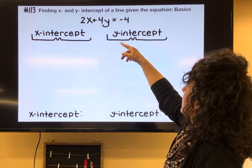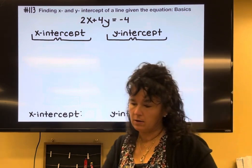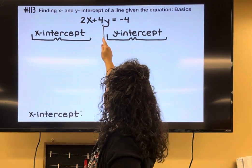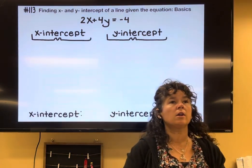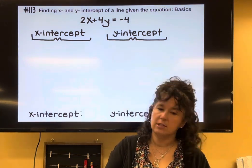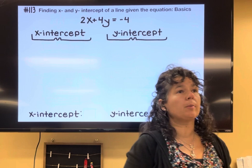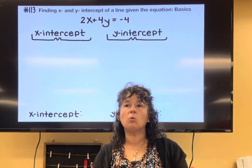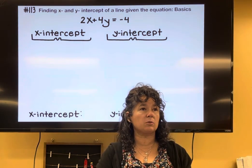We would like to find the x and y-intercept of the line 2x plus 4y equals negative 4. You can jot down in your notes that to find an x-intercept, you're going to replace the y with zero, and to find a y-intercept, you're going to replace the x with zero.